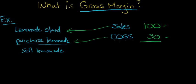The difference is what we call the gross margin. Gross margin is defined as sales or revenue, whatever you'd like to call it, minus the cost of goods sold.